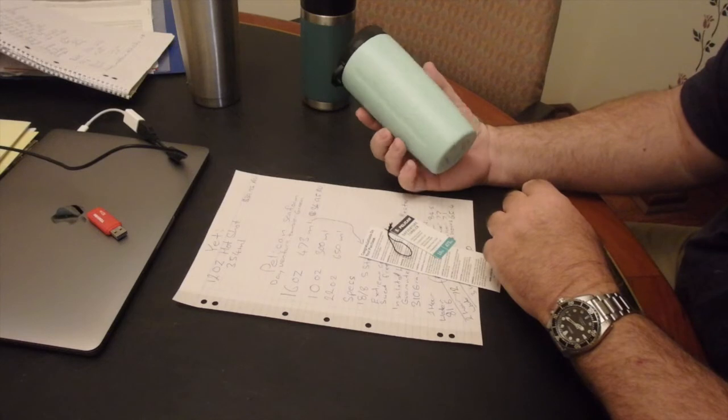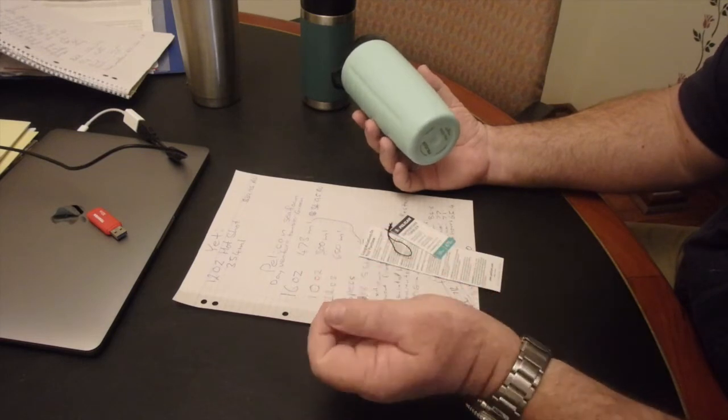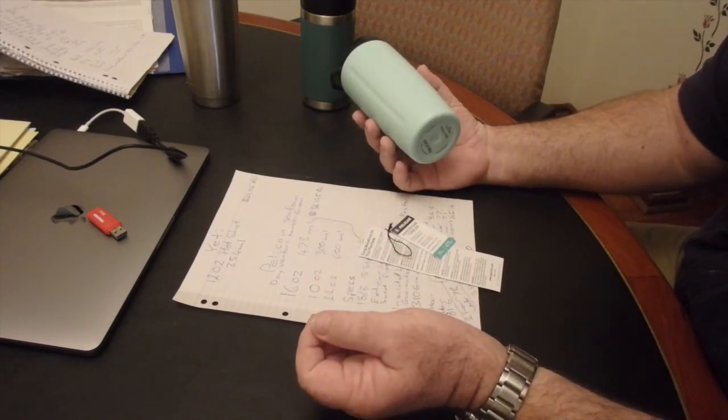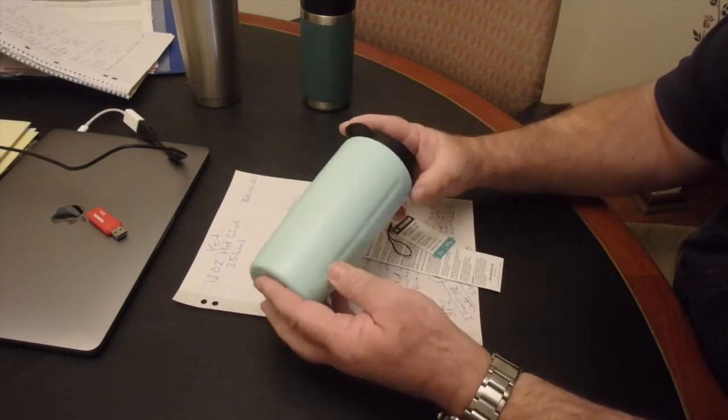Now they come in three different sizes: 10, 16, and 22 ounces. So for the rest of us here, that's 300ml, 473ml, and 650ml.